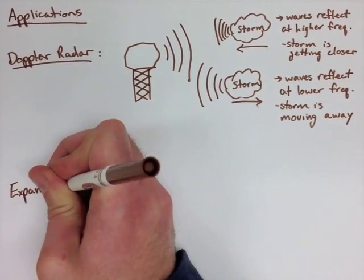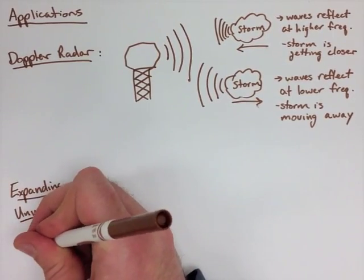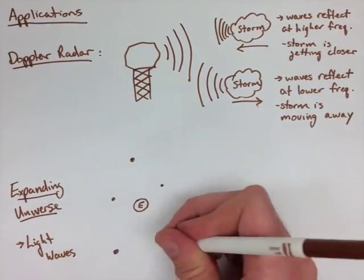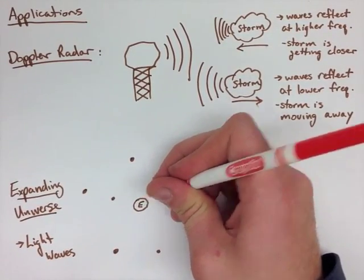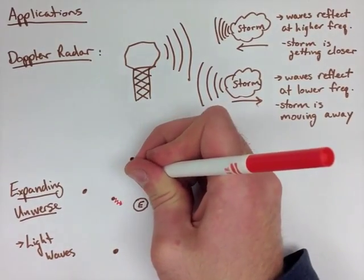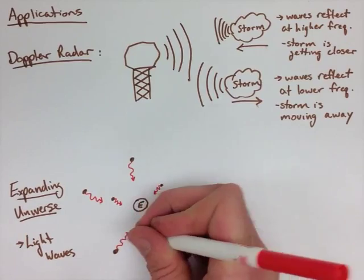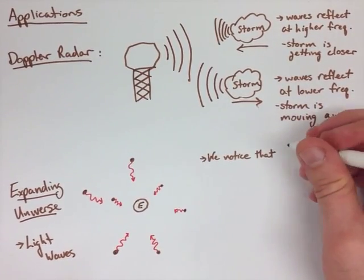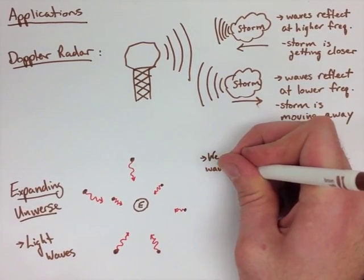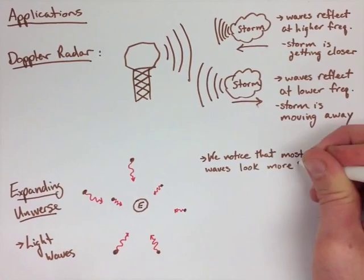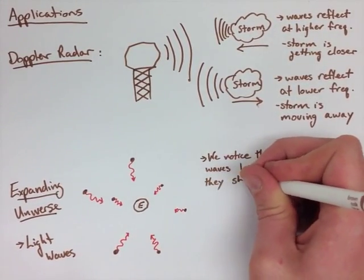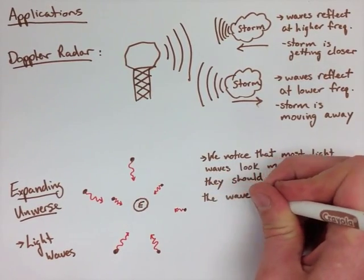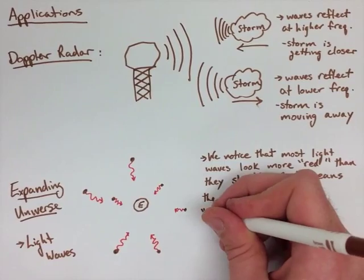The next example we're going to look at is the expanding universe. For this we're actually going to look at light waves, not sound waves. If we have Earth in the middle of the universe, which it's not, but for us let's just say it is, we have all these stars around us that are really far away and they're going to send some light rays towards us. The close light rays are going to have a high frequency. The further light rays away have a lower frequency, which is kind of weird. That lower frequency is actually making the light rays look more red. The more red they are, it means that they're actually kind of stretching out, and that actually means that everything is moving away from us or expanding. Because those light rays are stretching out, it's allowing us to deduce that the universe is expanding, because otherwise the light rays would all be the same wavelength.